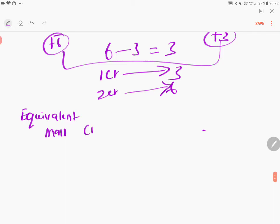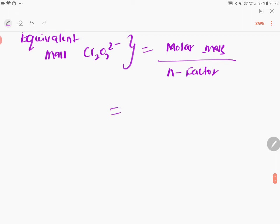The equivalent mass of dichromate as an oxidizing agent equals molar mass divided by n-factor. This is the formula you learned in stoichiometry. Now, if you calculate the molecular mass of dichromate...